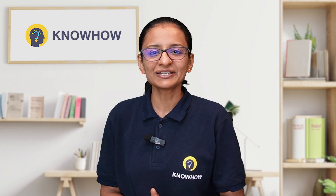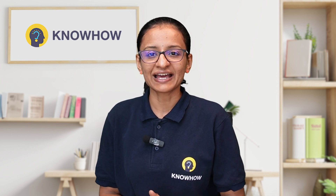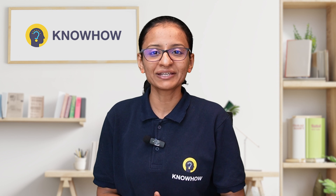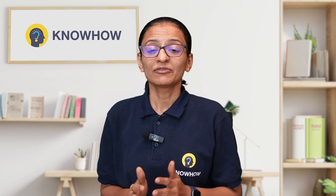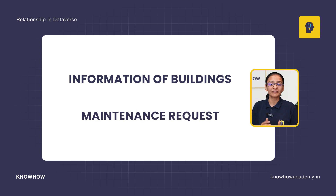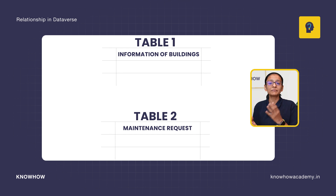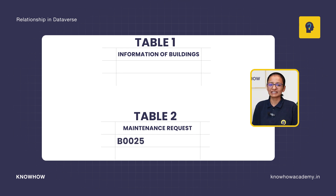First, let me tell you why relationship is required. As I mentioned in the scenario at the beginning of the video, you want to manage the information of buildings and you want to manage the information of maintenance requests. Both tables contain different data. Now, how can you connect your maintenance request to the building? We will store the building ID in the maintenance table. That's why relationship is required in Dataverse tables.